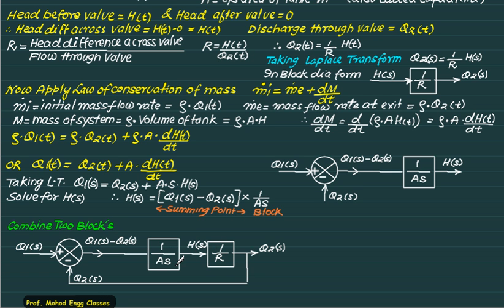This is in numerator by denominator form. So Q2(s) by Q1(s) is simply numerator. The numerator of both these is 1. The denominator of this is AS into R. So this is ASR. Then again we write plus because the feedback is negative here. Numerator is again 1 and the feedback is also 1. So the transfer function is Q2(s) upon Q1(s) equal to 1 upon ASR plus 1.